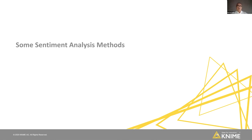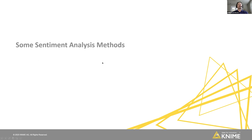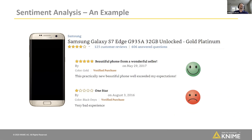Let's talk a little bit about sentiment analysis. What is sentiment analysis? Let's say for example you have some product reviews — maybe it's a review of a phone on Amazon like the Samsung Galaxy S7. You might get different reviews containing different text: one person says 'beautiful phone from a wonderful seller, practically new, exceeded my expectations' — obviously very happy — whereas another says 'very bad experience.' When we're looking at text like this, it's obvious to us as humans how people feel, but it's sometimes less obvious to a computer. So how can we train models that will do this type of sentiment extraction and analysis for us? There are a few different ways we're going to talk about.